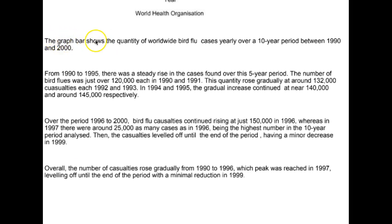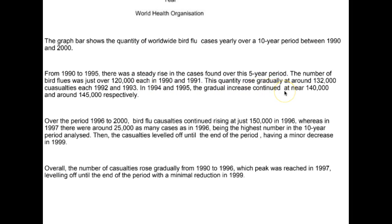The bar graph — or the bar chart — shows the quantity of worldwide bird flu cases over a 10-year period between 1990 and 2000. Genius. From 1990 to 1995 there's a steady rise in the cases found over this five-year period. The number of bird flu incidents — incidents as victims — with bird flu was just over 120,000 each in 1990 and 1991. This quantity rose gradually at around 132,000 casualties each for 1992 and 1993. In 1994 and 1995, the gradual increase continued at near 140,000 and around 145,000 respectively.